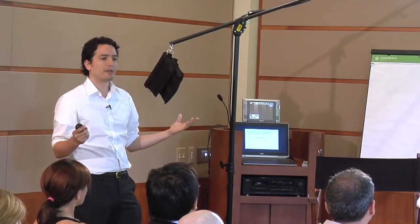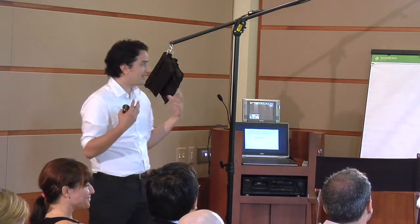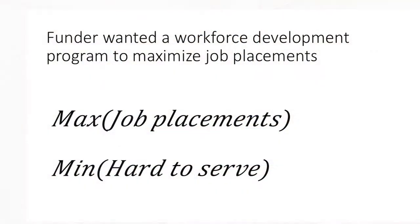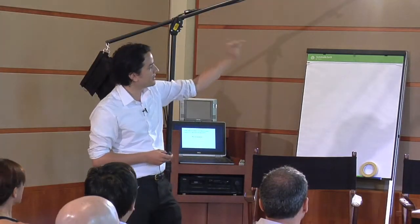Here's another example: a workforce development program funded by the state of California. Their funder wants them to maximize job placements. How do you do that? I told them: you don't need to hire me and pay me a bunch of money to figure that out. I can tell you very simply — all you have to do is minimize the hard-to-serve people. This isn't what the organization wanted to do and it isn't what the funder intended, but the funder chose an indicator to maximize job placements that would rationally lead the organization to implement exactly that. That's a pretty significant issue.